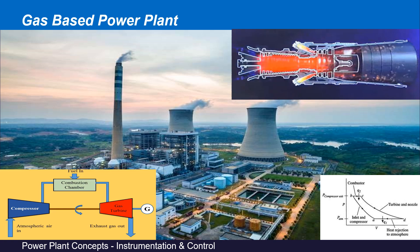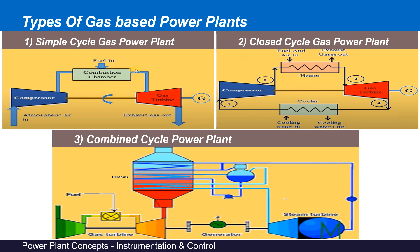Welcome friends. In this video we will discuss about various types of gas-based power plants. Basically we can segregate our gas-based power plants into three major categories. The first one is simple cycle gas power plant, the second type is closed cycle gas power plant, and the third one is combined cycle power plant.